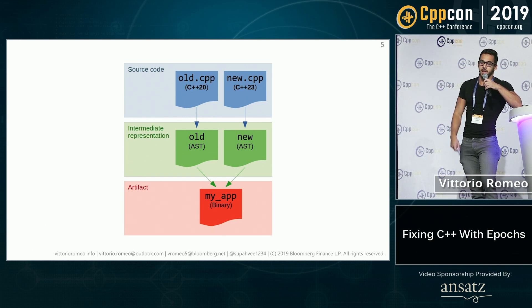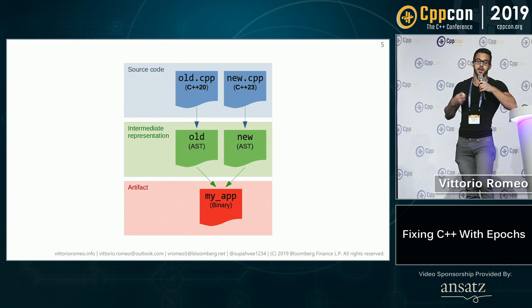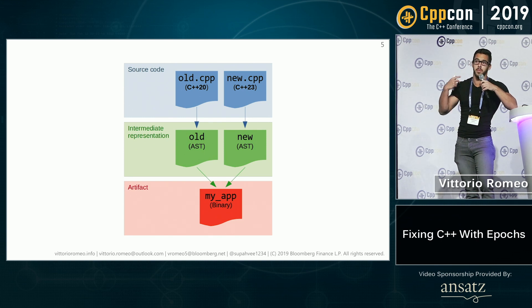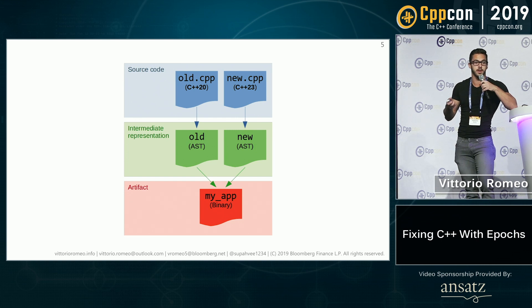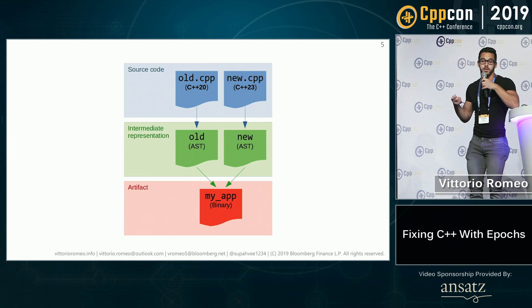Let's change this a little bit and imagine that we have the same mechanism for C++. You can opt in to an edition in your old file, and in your new file they can be different. They will compile to the same AST, and then you can build an artifact out of that. The way we can do this is thanks to modules. Modules provide an isolated unit that compiles to some binary IR, so there is no reason why each module should have the same syntax. They can compile to something common in the middle, but they can have different syntax within themselves.